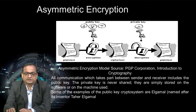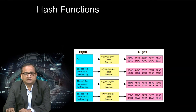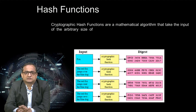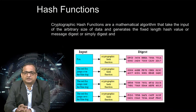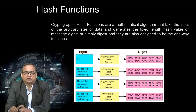Some examples of public key cryptosystems include ElGamal, named after its inventor Taher ElGamal. RSA is the most widely used, even in current times. Cryptographic hash functions are a mathematical algorithm that takes an input of arbitrary size and generates a fixed-length hash value, also called a message digest. They are designed to be one-way functions.